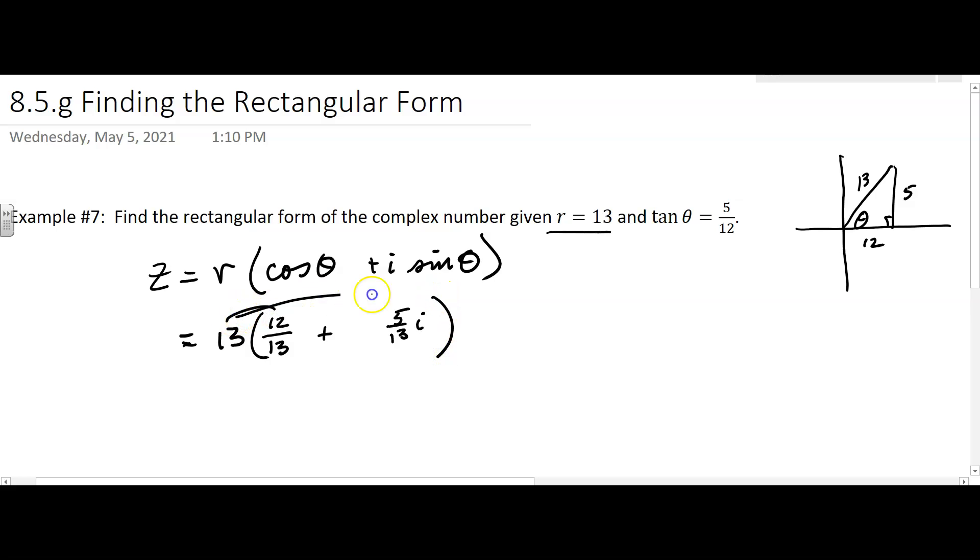If you're distributing the 13, you're going to get 12 + 5i for the complex number.